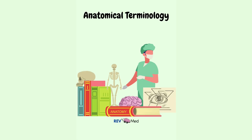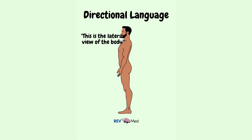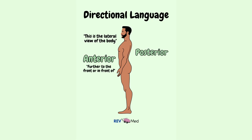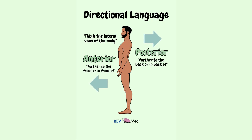To never be confused, anatomy has a verbal map — a directional language of standardized terms to explain where one part of the body is in relation to another.